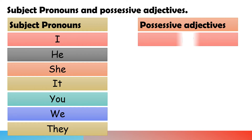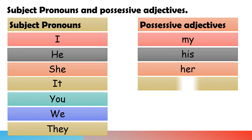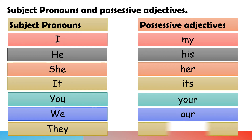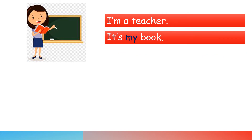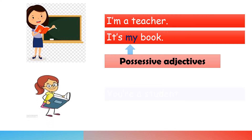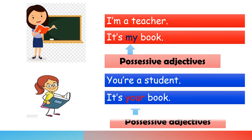Possessive adjectives are: my, his, her, its, your, our, and their. For example: I am a teacher — it's my book. 'My' is a possessive adjective. You are a student — it's your book. 'Your' is a possessive adjective.